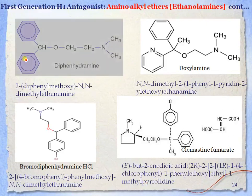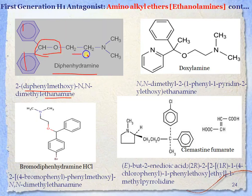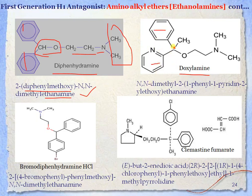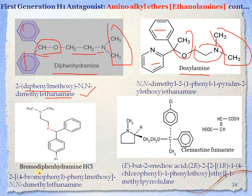Examples include diphenhydramine, whose IUPAC is 2-(diphenylmethoxy)-N,N-dimethylethanamine. Doxylamine contains one phenyl and one pyridinyl group, with an ethoxy linking group and N,N-dimethylethylamine chain — its IUPAC is 2-[1-(4-methylphenyl)-1-phenyl-ethoxy]-N,N-dimethylethanamine. Bromodiphenhydramine is essentially diphenhydramine with a bromo substituent at the para position of one phenyl ring.